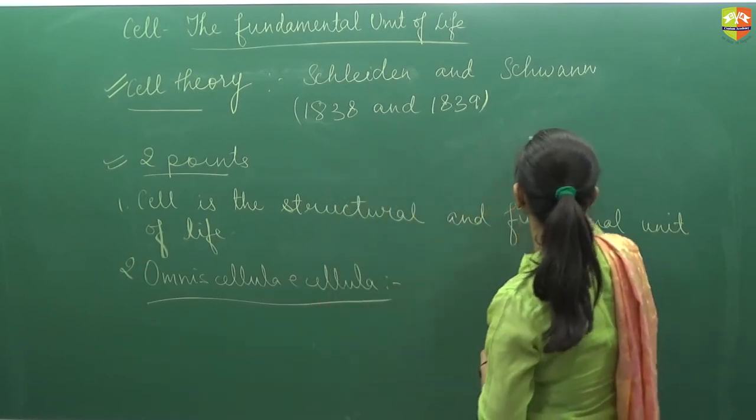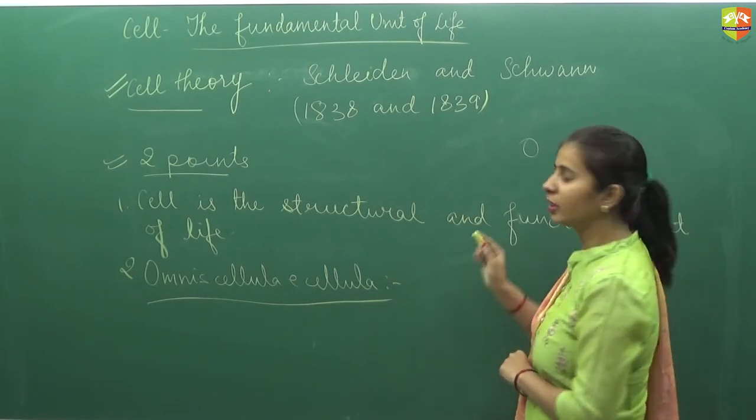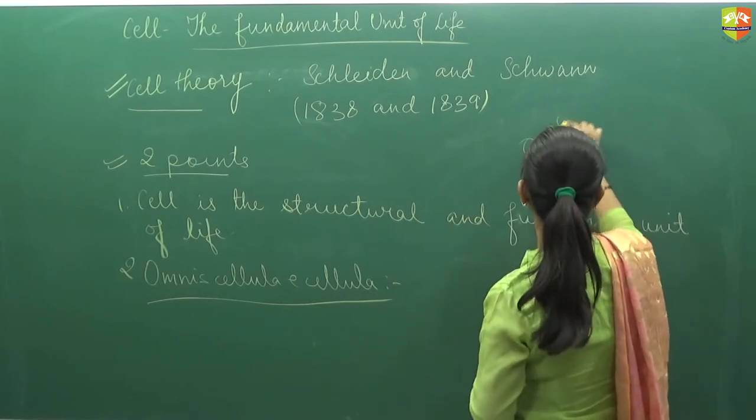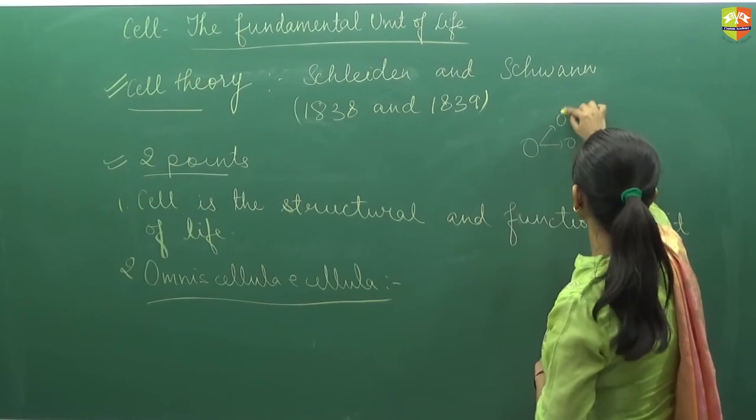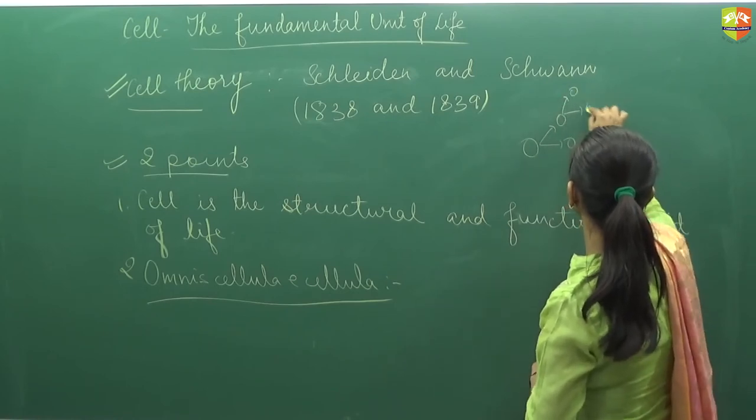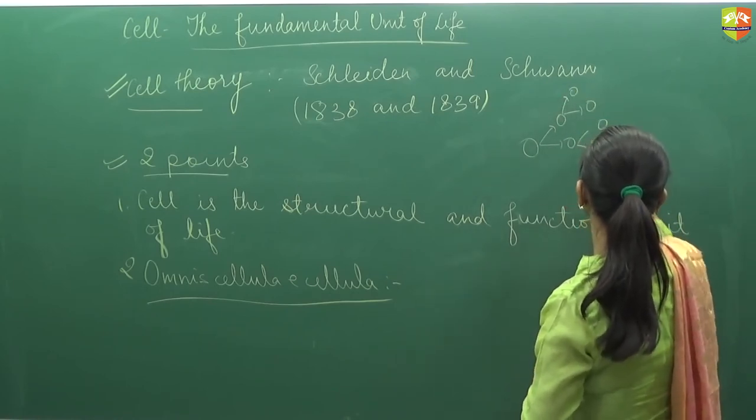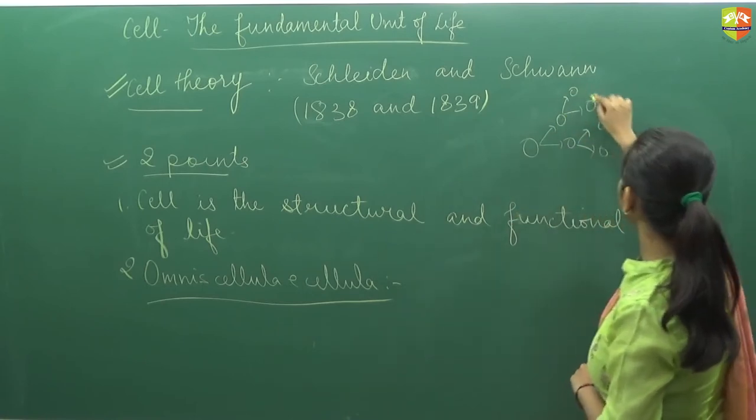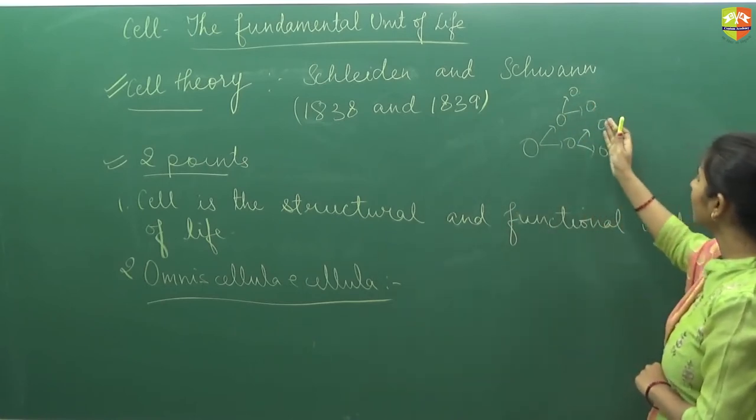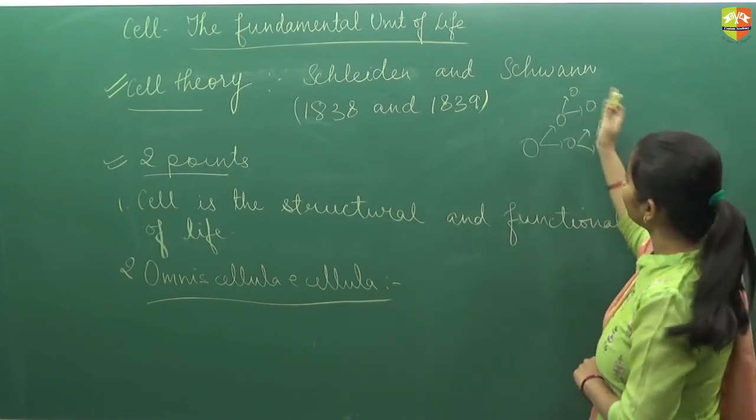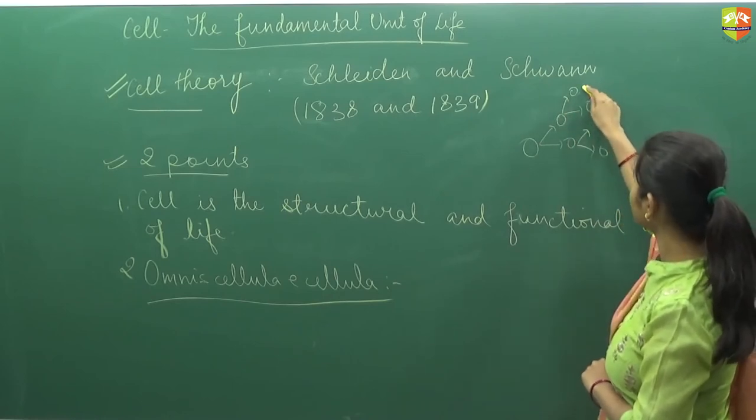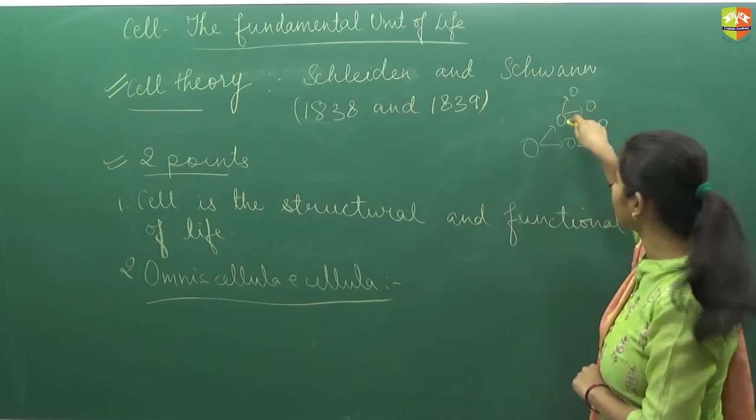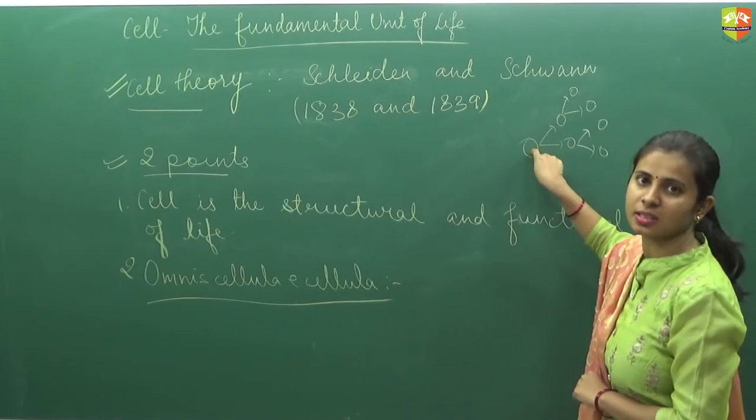For example, if there is one cell, it will undergo division. It will form two cells. Now this will also undergo division, two cells. Similarly with this. So how many cells? One, two, three, four. So these cells are originated from the pre-existing cells. So for these cells, these are the pre-existing cells. And for these cells, this is the pre-existing cell.